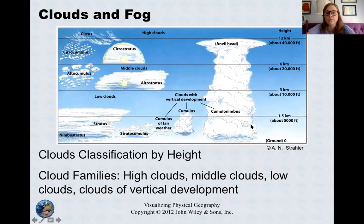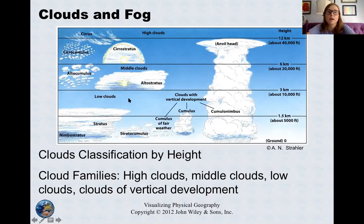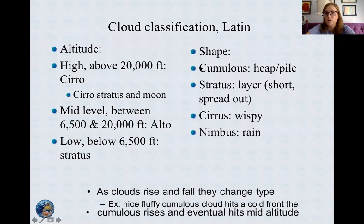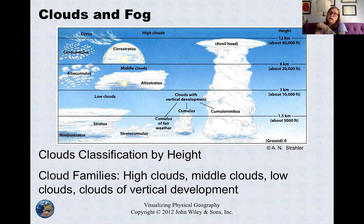Clouds are classified by both height and shape. We have our high clouds up here — cirro clouds, 20,000 feet or above. We have our mid-level clouds — alto. And then we have our low-level clouds — stratus clouds — way down here around 5,000 feet. The kinds of clouds you could hike to.